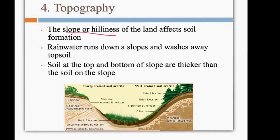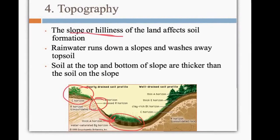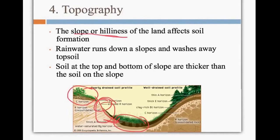The topography — the slope or hilliness of the land — can also affect how soil forms. Rainwater runs downhill and ends up washing away topsoil. So the soil at the top and the bottom of the slope end up being much thicker than what's in the middle.